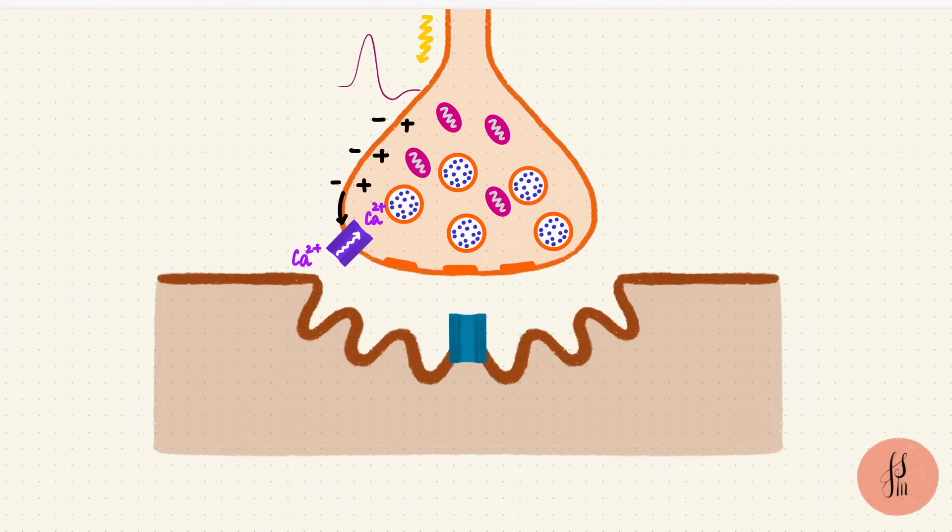The entry of calcium ions makes the synaptic vesicles, filled with neurotransmitter, move towards the membrane. So the vesicles move towards the active zones on the pre-synaptic membrane.